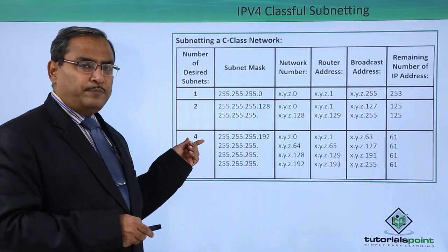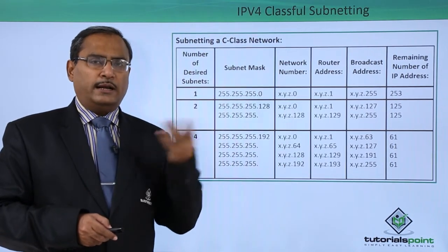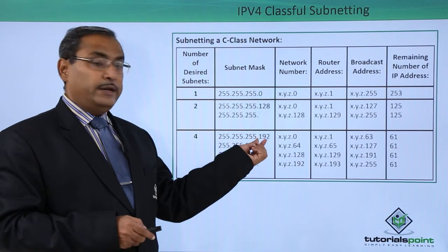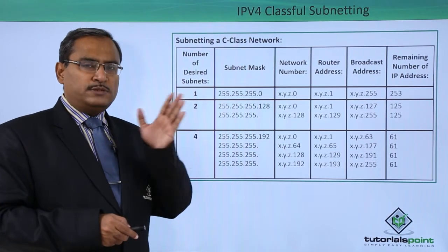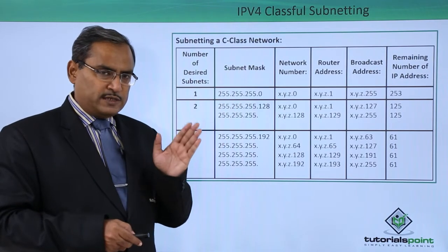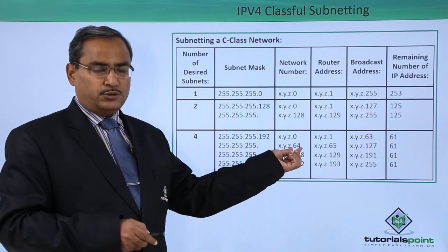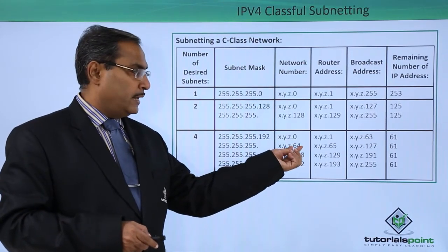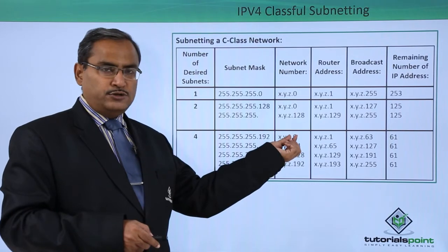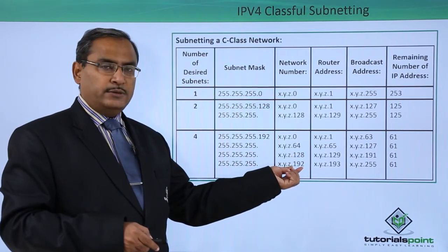For 4 subnets, 2 bits are required for subnet numbering: 00 for subnet 1, 01 for subnet 2, 10 for subnet 3, and 11 for subnet 4. Along with the 24 bits of 1 in the subnet mask, another 2 bits are needed for administrative purposes, giving 128 + 64 = 192 in the last byte. The subnet network numbers are: 00 = 0, 01 = 64, 10 = 128, and 11 = 192.